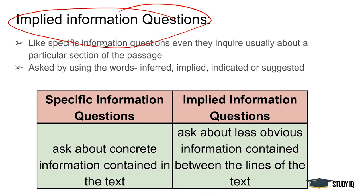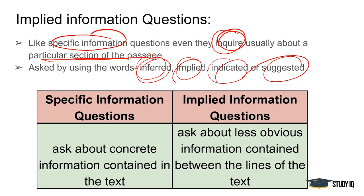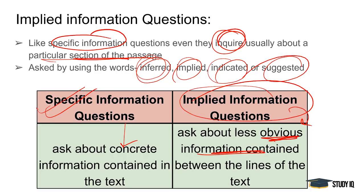There are also implied information questions. Specific information questions inquire about a particular section of the passage, while words like inferred, implied, indicated, and suggested are used for implied information questions. Specific information questions ask directly for concrete information, whereas implied information questions ask less obvious things — what is your implication, your gathering, what is inferred? These are two important things.